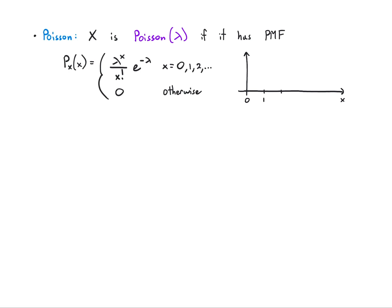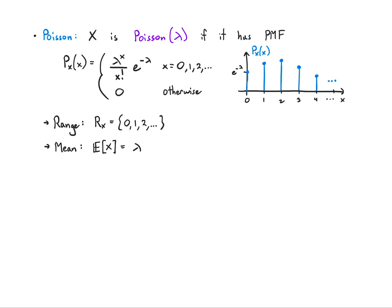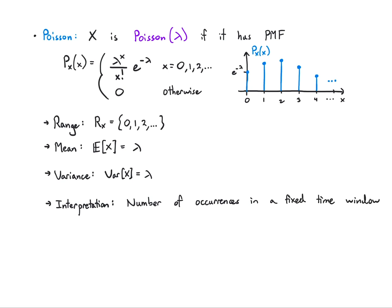For now don't worry about why the formula looks like this — let's look at the illustration and learn the mean and variance. The PMF might start at some intermediate value, go up, and then come back down. The range is 0, 1, 2, ... up to infinity. The mean is λ and the variance is also λ — simple, though not apparent at first glance. The interpretation is that this models the number of occurrences of some event in a fixed time window. For example, monitoring a website to see how many hits you get per hour might be modeled with a Poisson distribution. Another application is the number of photons hitting a CCD pixel in one millisecond.